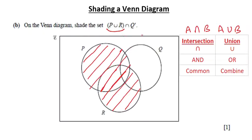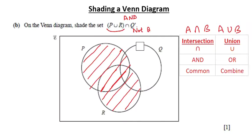But that's not enough. We are asked for the intersection of that whole set with Q complement. Intersection means 'and' — the first condition (P∪R) has to be met, and additionally, the second condition must also be met: Q complement means 'not Q', so elements cannot be in Q. When we shaded P∪R, there was a part that fell inside Q. The second condition tells us we can't include that part. So this is going to be your final result.